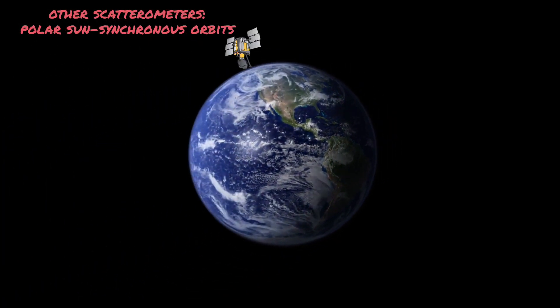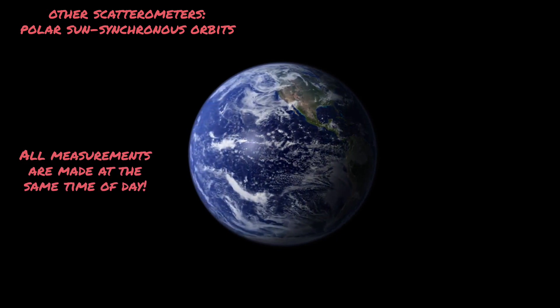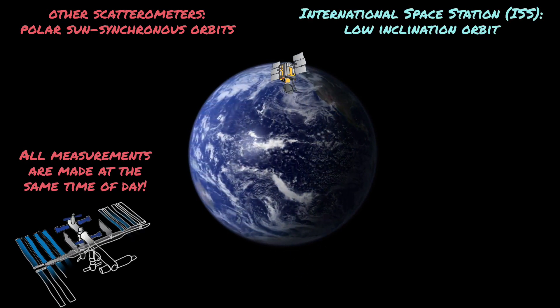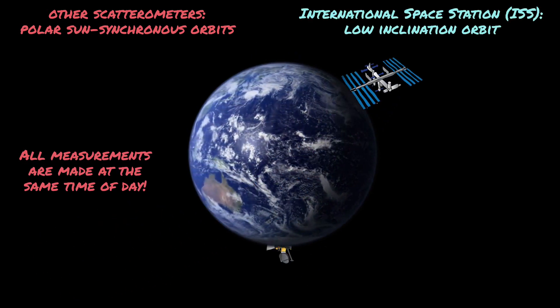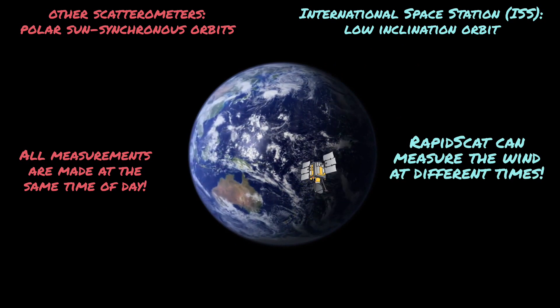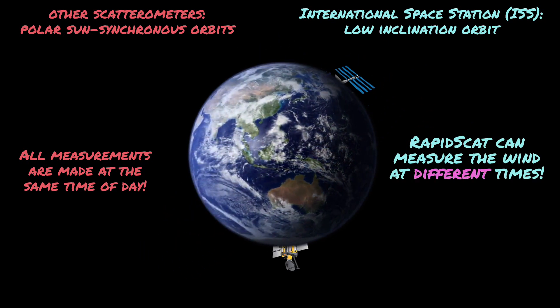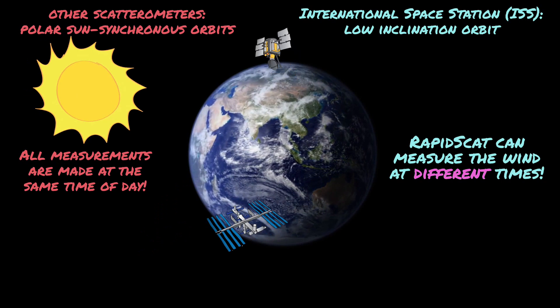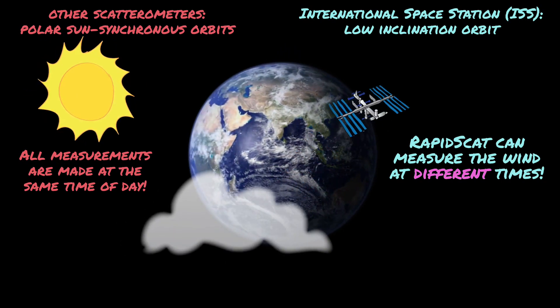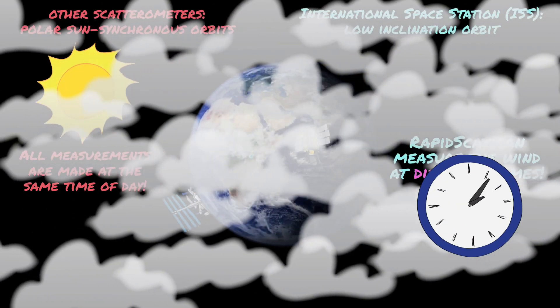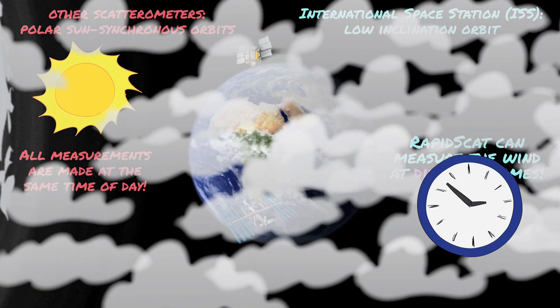Other scatterometers pass over a point on the surface at roughly the same time every day. ISS travels in a completely different orbit, which means that RapidScat will be able to measure the wind at different times. That's really important when you're trying to understand how heating from the sun can affect winds and cloud formation from hour to hour, and it also means we can more accurately track tropical storms that might develop into dangerous hurricanes.